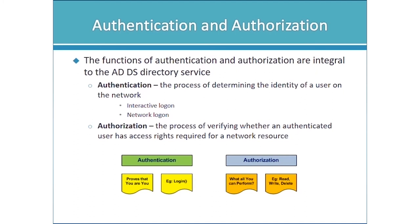Authentication on a Windows network means any kind of login. There is interactive logon — sitting in front of a computer and typing a username and password. Then there is network logon, which occurs any time you try to access something over the network. In a client-server domain environment, we often don't even see the network logon because it passes your interactive login credentials across the network without prompting you again. Active Directory enables single sign-on — you log on to the domain once and can access resources throughout the domain.